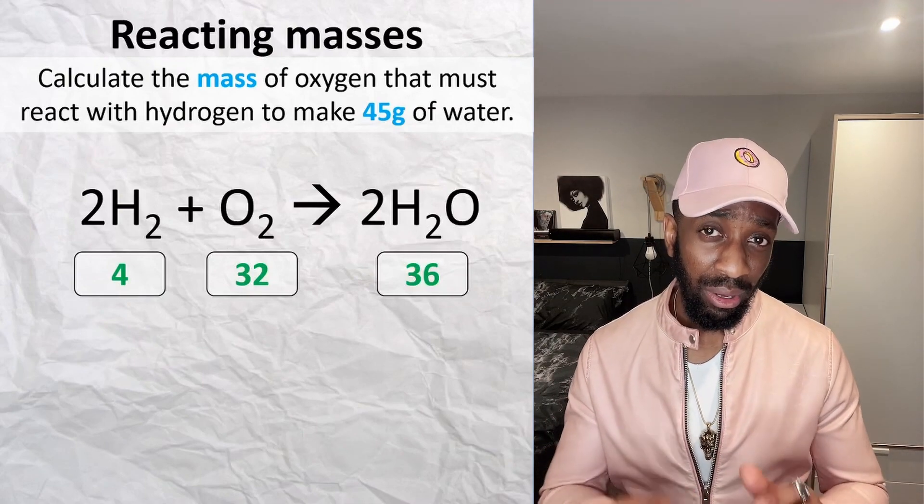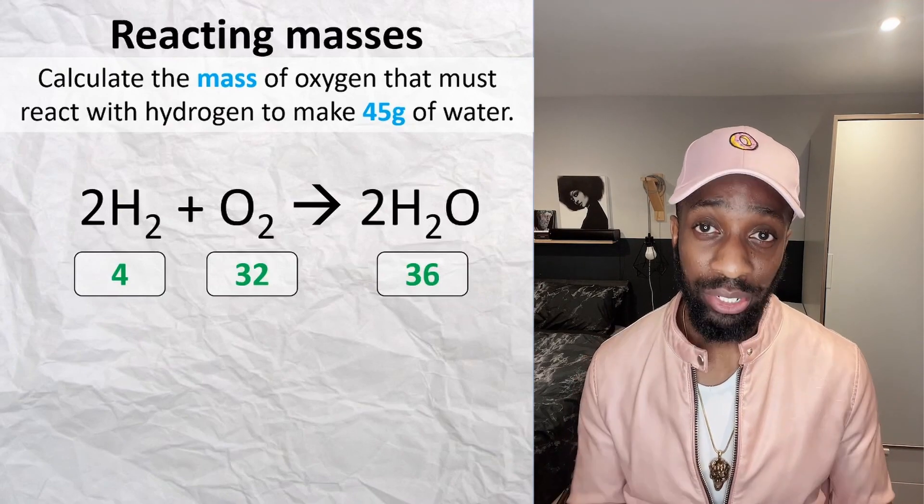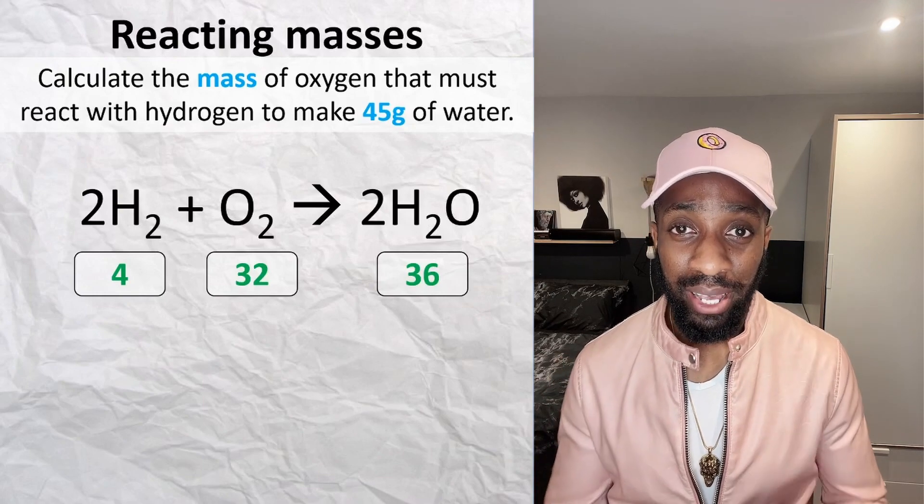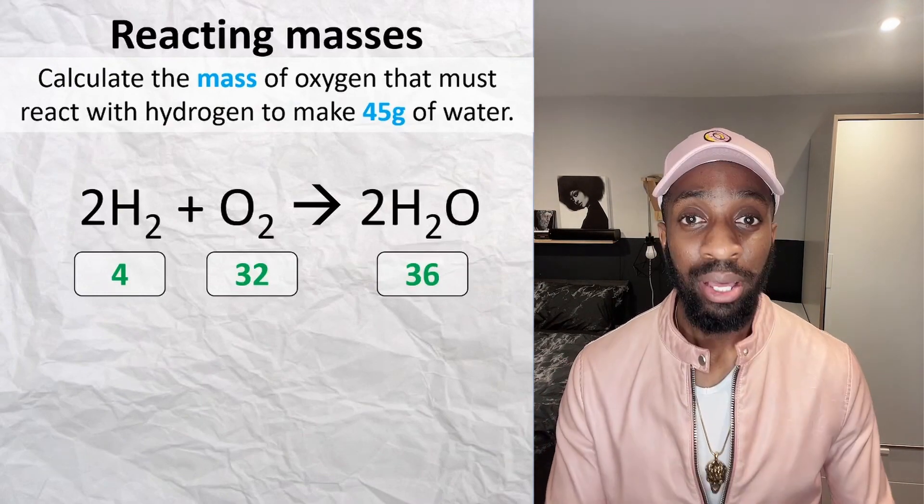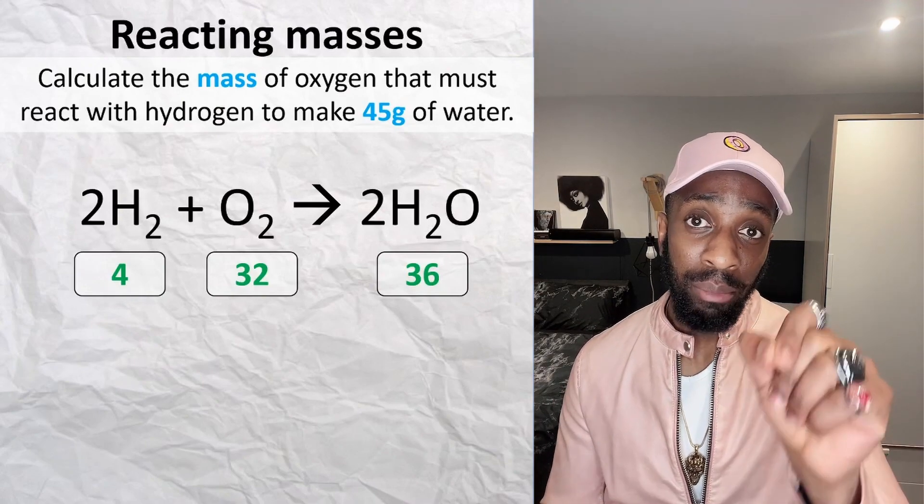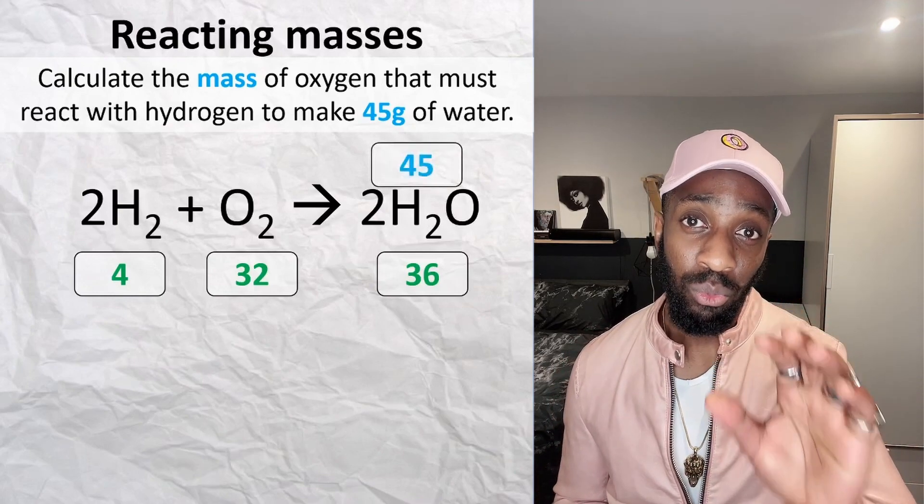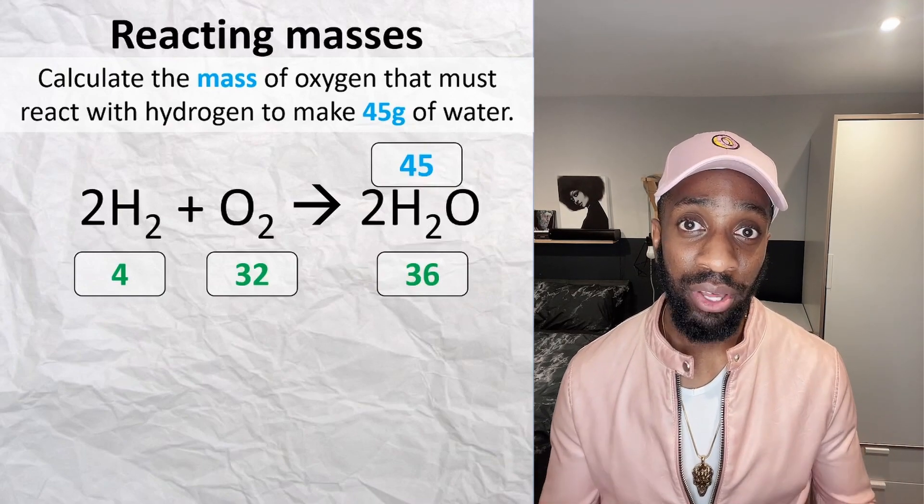Now this is the trickiest part of this whole calculation—actually reading and understanding the question. This is where I recommend using a highlighter. The question is telling us that we want to produce 45 grams of water. Now that 45, we highlight it, and because it's water, we want to make sure we don't place it above any other substance. So write the 45 above the water, which has the molar mass of 36.